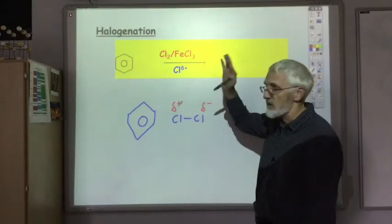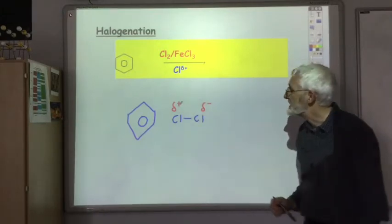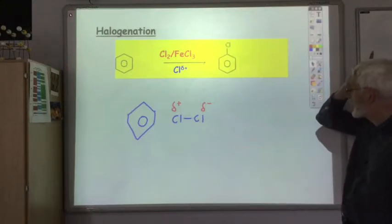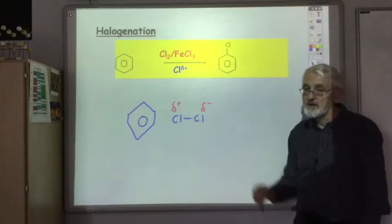The FeCl3 is just a catalyst for the process. The product of the reaction is you've replaced the hydrogen with the halogen, in this case, chlorine.